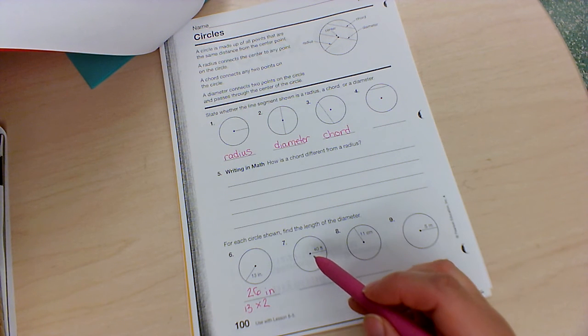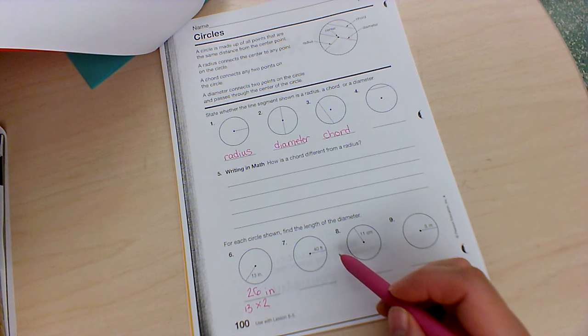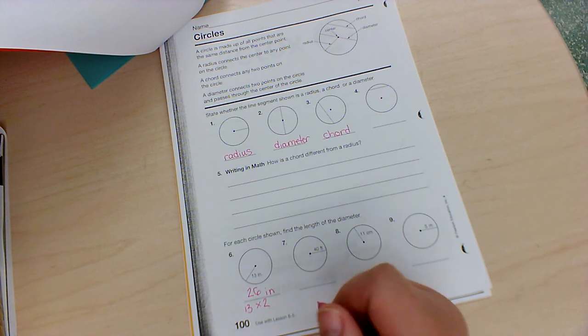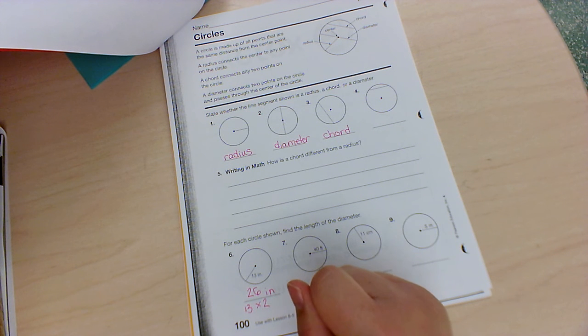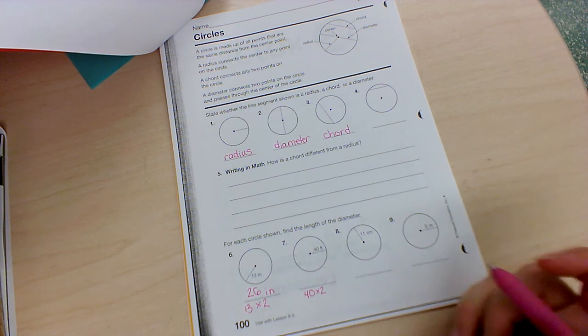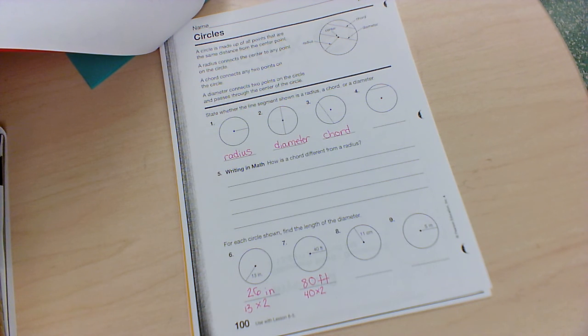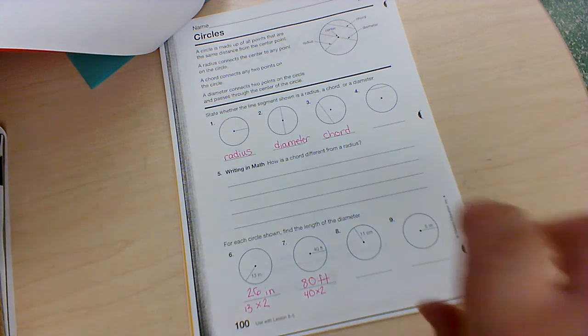So number seven says 40 feet is the radius. So to do the diameter, I need to double that. So 40 times 2 is 80, and this one's in feet. So go ahead, try to figure out the rest on your own.